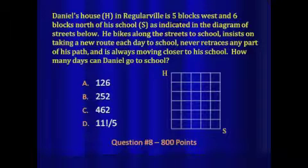The lines you see there are streets, both horizontal and vertical. He bikes along the streets to school, insists on taking a new route each day, never retraces any part of his path, and is always moving closer to his school. How many days can Daniel go to school?